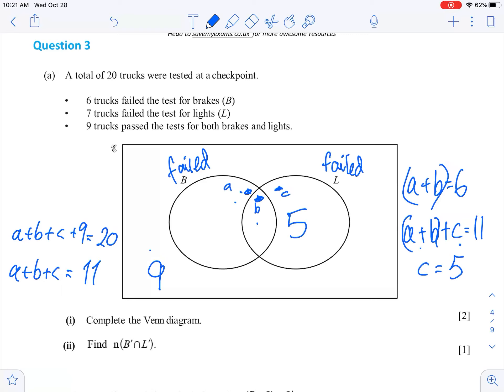Now that I know that, because I know 6 trucks failed, so A and B were 6, I also know 7 trucks failed lights. So B plus C is 7. And we know that C is 5, so this must be B equals 2.